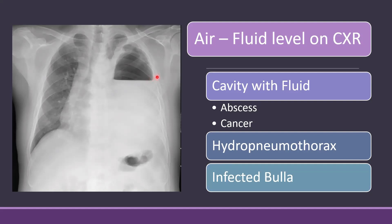Another cause of an air fluid level is an infected bulla. If a bulla gets infected, there is fluid inside it, and it can also give rise to a similar appearance on a chest X-ray. So this was all about air fluid levels on a chest X-ray.